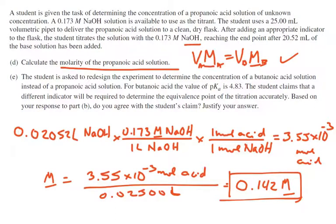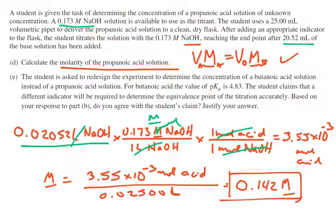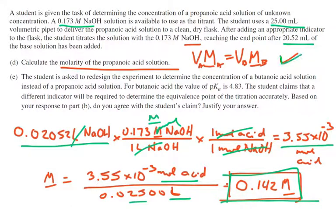Starting with 20.52 mL of base at 0.173 molar: convert to liters, multiply by molarity to get moles of NaOH. Since 1 mole NaOH reacts with 1 mole acid, we get 3.55 times 10 to the minus 3 moles of propanoic acid. Molarity equals moles divided by liters; dividing by 0.02500 liters (the 25 mL pipette volume, four significant figures) gives a molarity of 0.0142 molar for the propanoic acid solution.